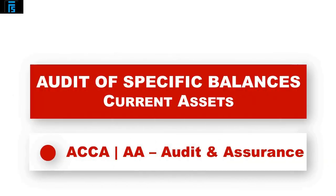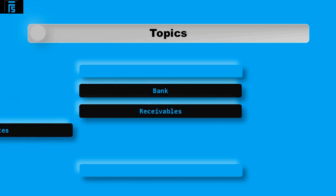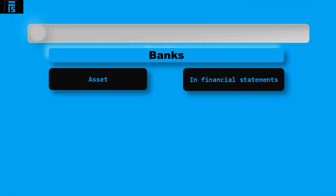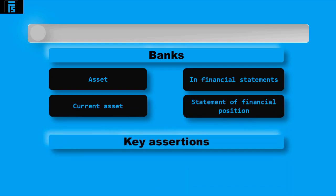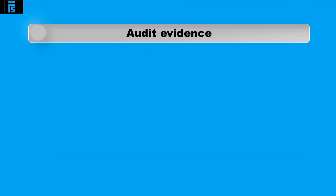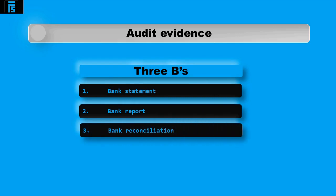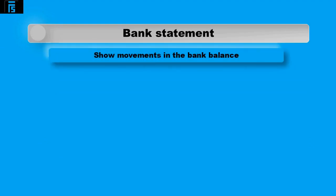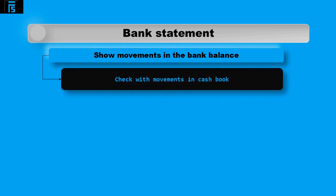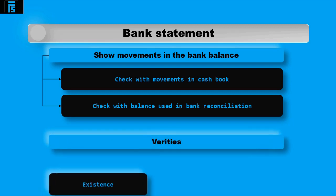This video covers practical ideas for auditing current assets, including bank, receivables, and inventory. Bank is a current asset in the statement of financial position. The key assertions to verify are existence and valuation. The evidence to audit the bank balance can be referred to as the three B's: the bank statement, the bank report, and the bank reconciliation. The bank statement is independent evidence showing all movements in the bank balance during the period, agreed with movements in the cashbook — verifying existence and valuation.